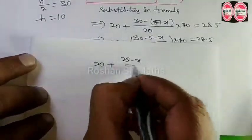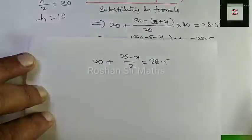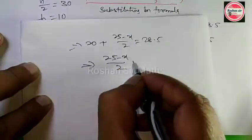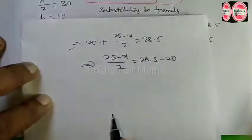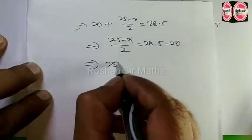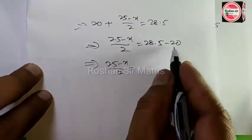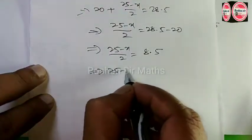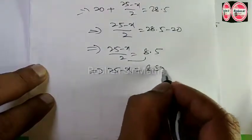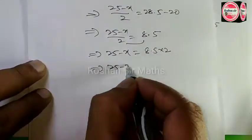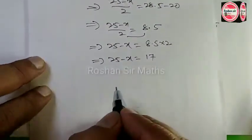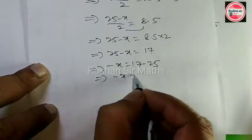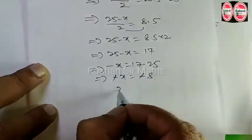So 20 plus (25 minus x) by 2 is equal to 28.5. Rearranging: (25 minus x) by 2 is equal to 28.5 minus 20, which is 8.5. Cross-multiplying: 25 minus x equals 8.5 into 2, which is 17. Therefore, minus x equals 17 minus 25, so minus x equals minus 8, giving x equals 8.